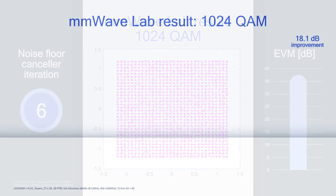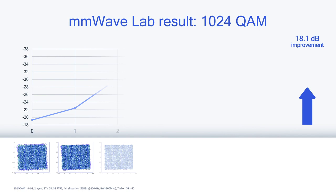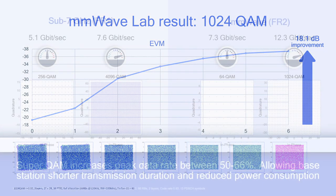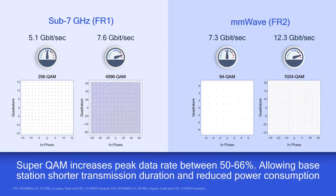Comparing to where we started, we see that we have improved the signal quality by an impressive 18 dB. This signal quality gain results in a big surge in peak data rates, as much as 50 to 66%. Superquam technology can increase the peak data rate significantly, which is not only great for users, but also allows the base station for shorter transmission duration and therefore reduced power consumption.